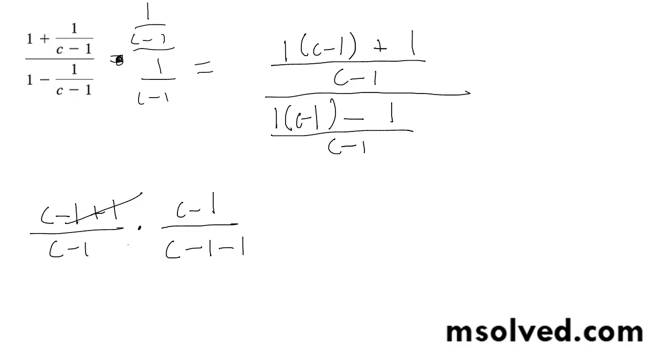So these cancel out, this cancels out, and I'm left with c over c minus 2. That's it.